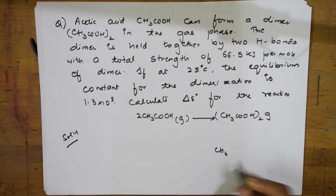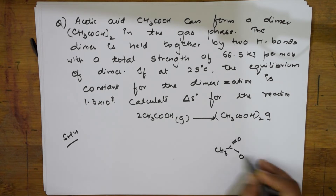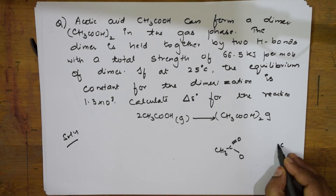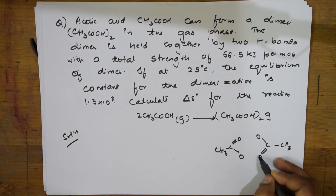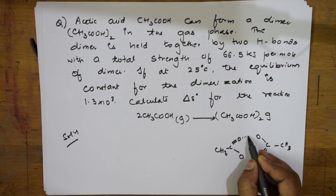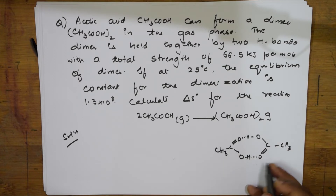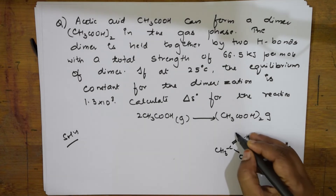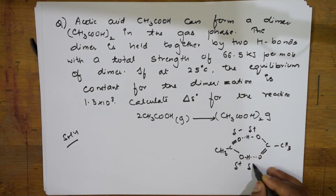A dimer means two monomers linked together. This is acetic acid: CH₃C with a double bond O on one side, oxygen on one side. CH₃ again, with alternate double bond and single bond. It is going to form hydrogen bonding on both sides — oxygen bond on both sides. This is partially negative, this is partially positive; this becomes partially positive, this becomes partially negative.